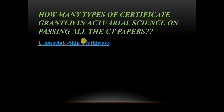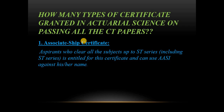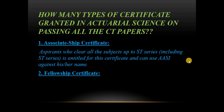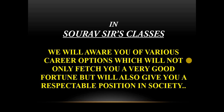There are two main certificates granted in actuarial science. The first is the Associateship certificate, which is awarded when you clear the CT series and the ST series. The second is the Fellowship certificate, which is awarded upon clearing the SA series.